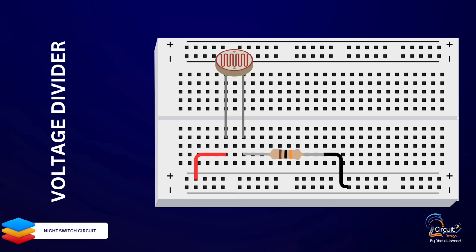The other leg of the resistor goes to the negative rail of the breadboard, connected to the negative terminal of our power source. This forms a voltage divider that will change based on light intensity.